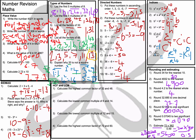Now the last section: HCF and LCM. HCF stands for Highest Common Factor and LCM is Lowest Common Multiple. Question number 1: calculate the HCF of 32 and 48 — the highest number that goes into both. We can decompose using prime factorisation. 16 is the highest number that goes into both, because 16×2=32 and 16×3=48.